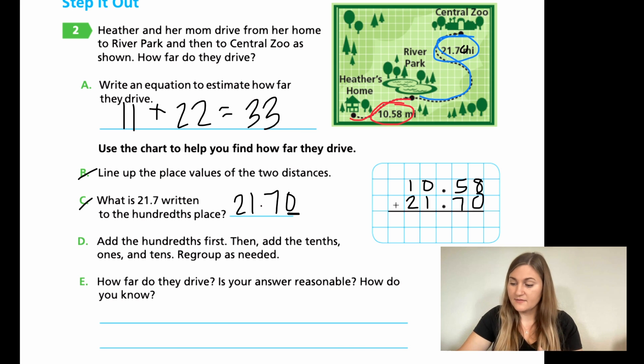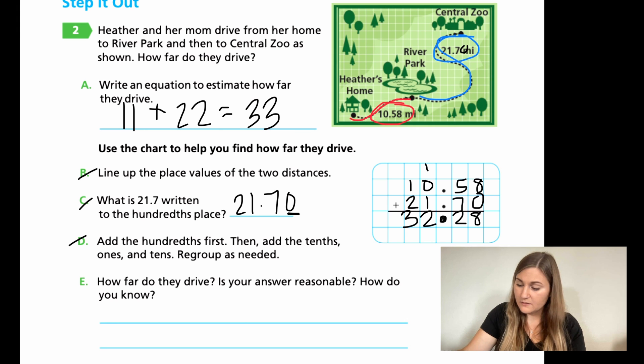D, add the hundreds, then the tens, then the ones, and the tens. Regroup as needed. So we're just going to add this problem together. So eight plus zero is eight. Seven plus five is 12. So I have my two. I'm going to carry the one over to the next group of numbers. So I'm going to bring down my decimal. Then I have the one plus the one, which is two and two plus one, which is three.